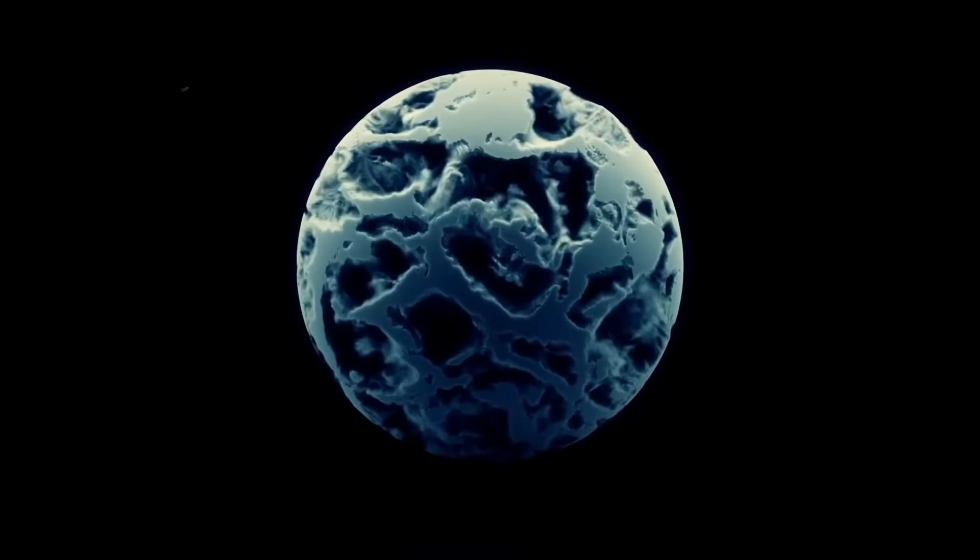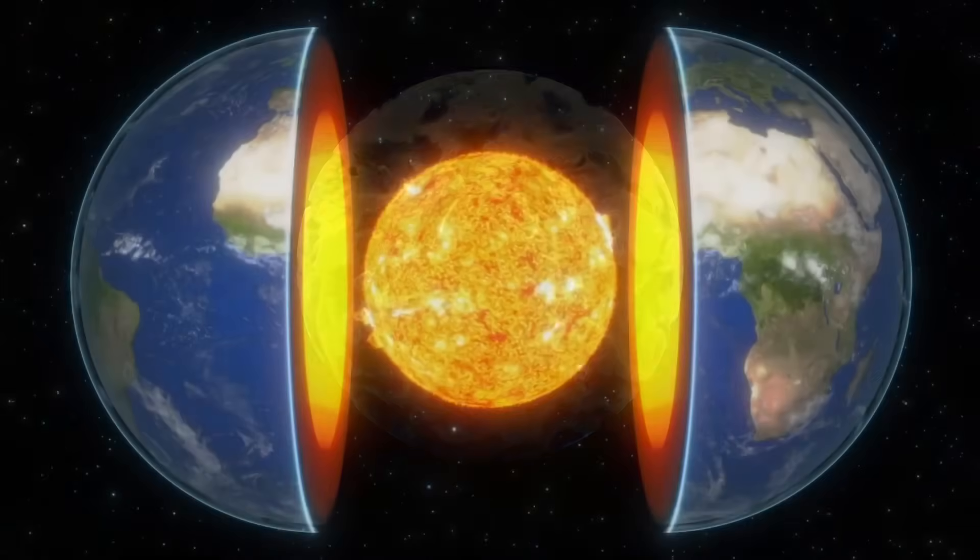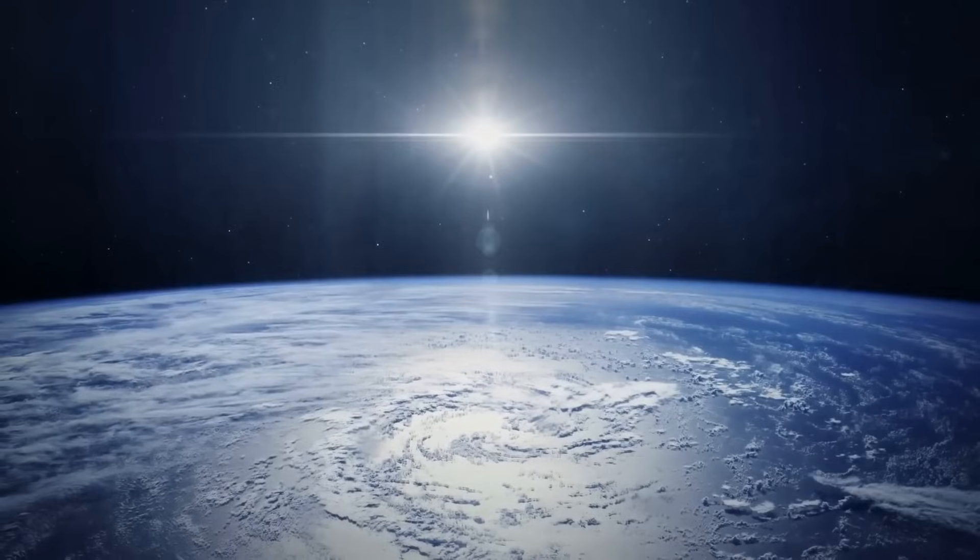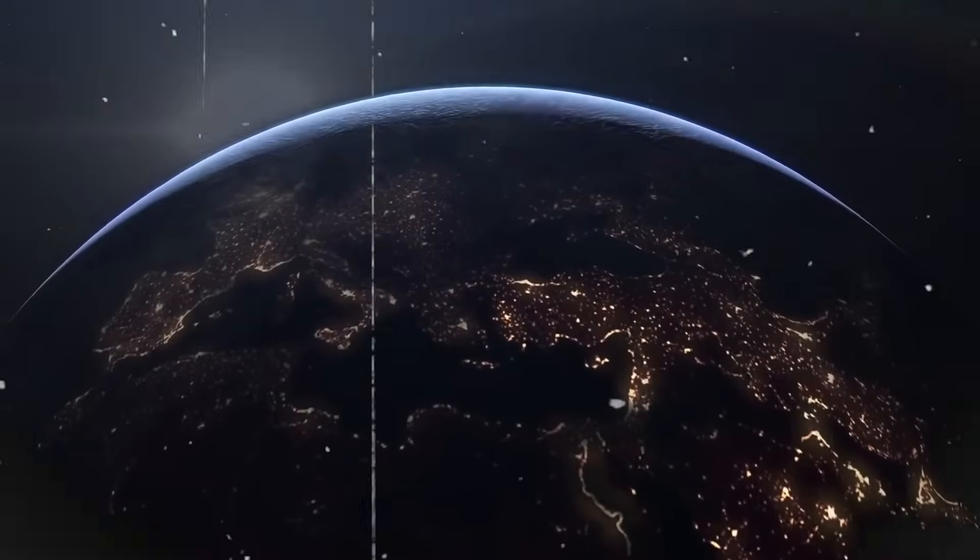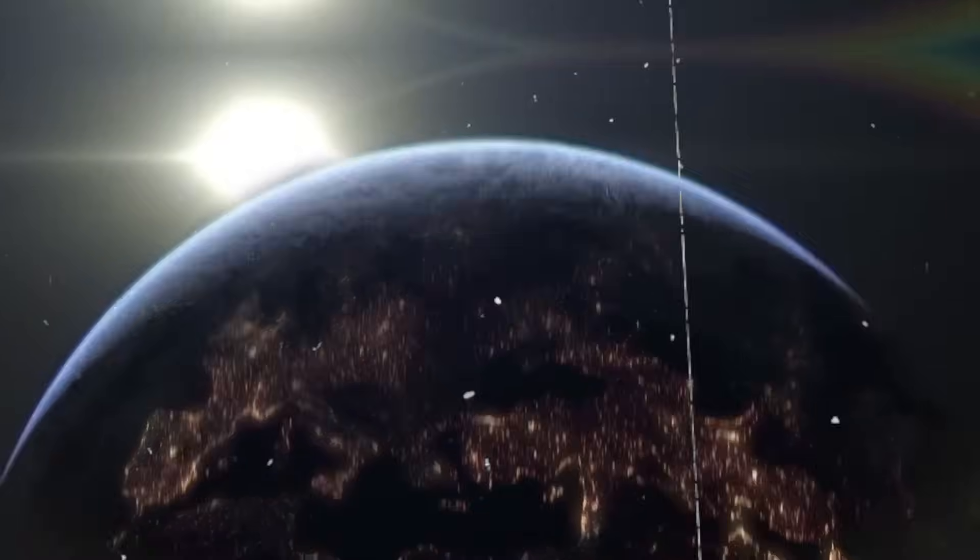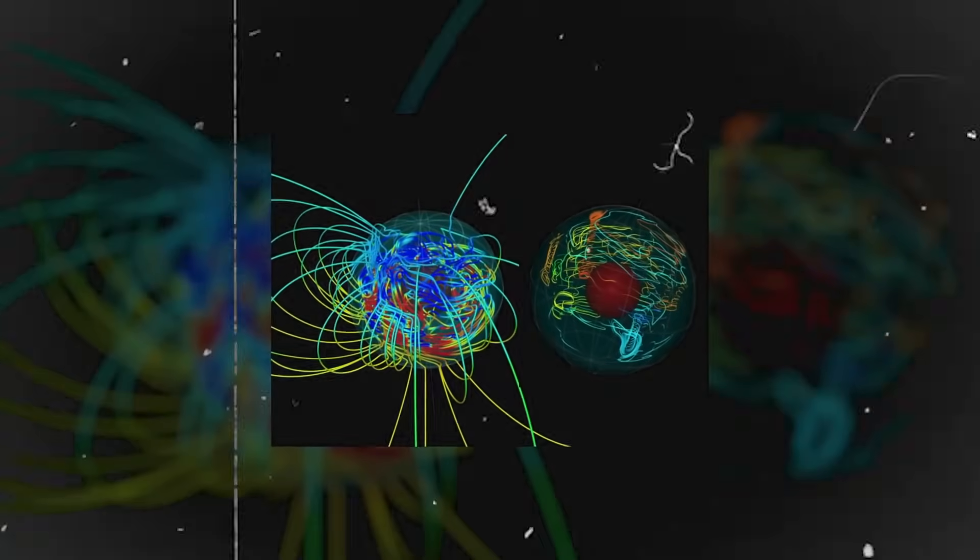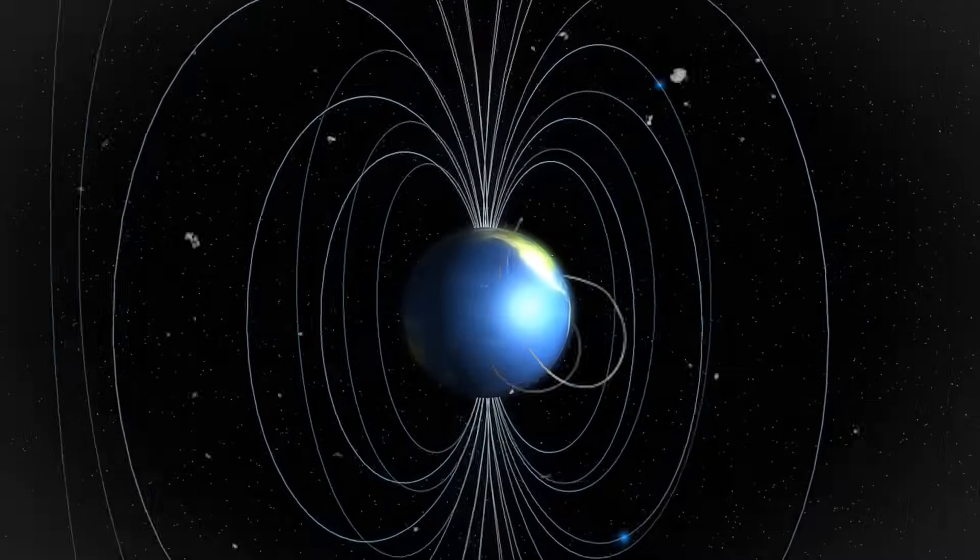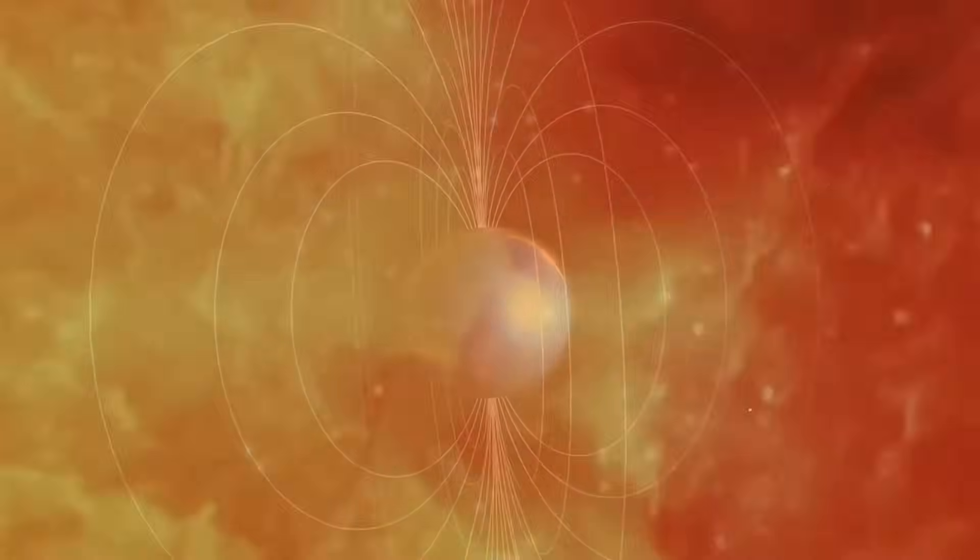Recent scientific studies have raised concerns about the gradual weakening of Earth's magnetic field, a trend observed over the past two centuries. This weakening is considered significant in the context of Earth's geological timeline, although it may appear slow on a human timescale. Since the 19th century, the strength of the magnetic field has diminished by approximately 9%.